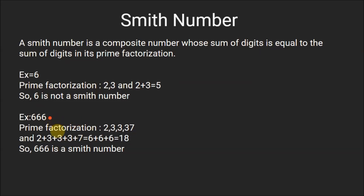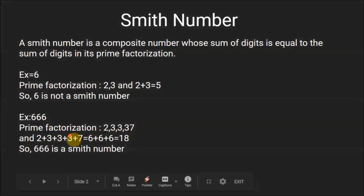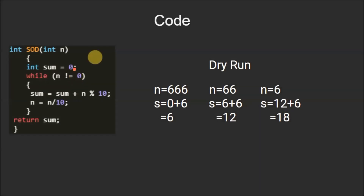For example, if the number is 666, its prime factorization will be 2, 3, 3, and 37, and the sum of these prime factors will be 18, which is equal to the sum of the digits of the original number. So 666 is a Smith number. Now let's look at the code. We have a function `sod` that will return the sum of digits of a number.